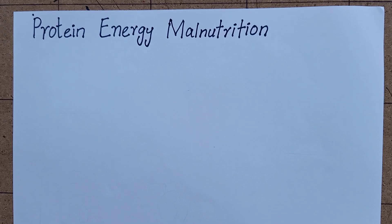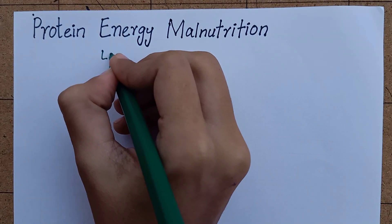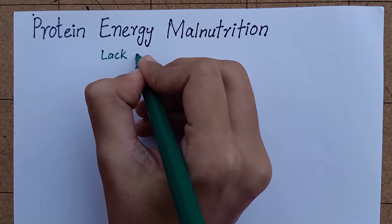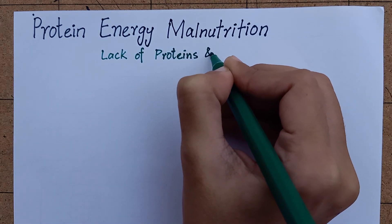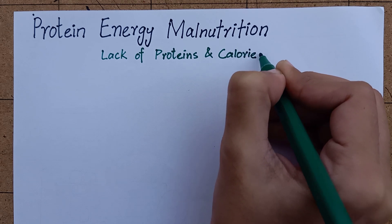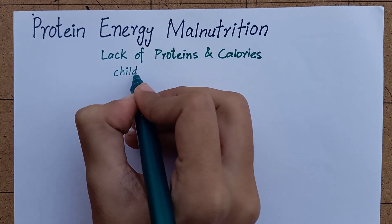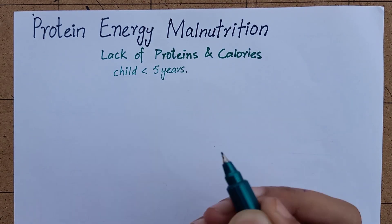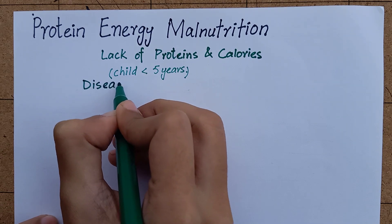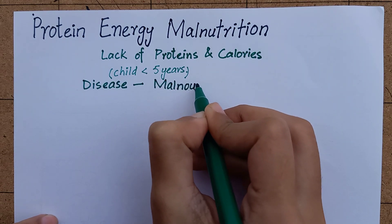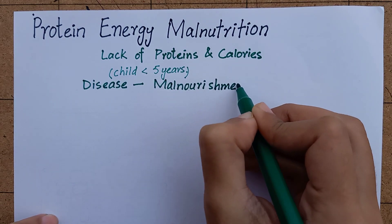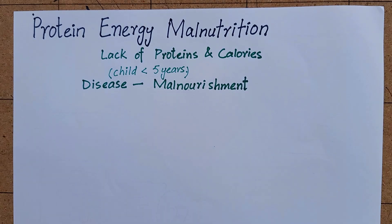We are going to learn about protein energy malnutrition. In a simple definition, it is a range of pathological conditions arising from a lack of proteins and calories in a child below five years of age. It is most frequently seen in patients with medical conditions that decrease appetite. It can also be seen in malnourished children, especially in developing and underdeveloped countries.